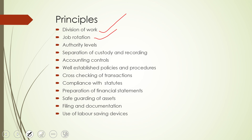The third principle is authority level. There must be a clear-cut authority level for allowing various transactions. If authority is specified along with responsibilities, the existence of authority levels results in review of operations of subordinates. As per this principle, every individual can know to whom to report and who will inspect the work of subordinates. The fourth principle is separation of custody and recording — the person handling an asset should not be allowed to maintain the records.